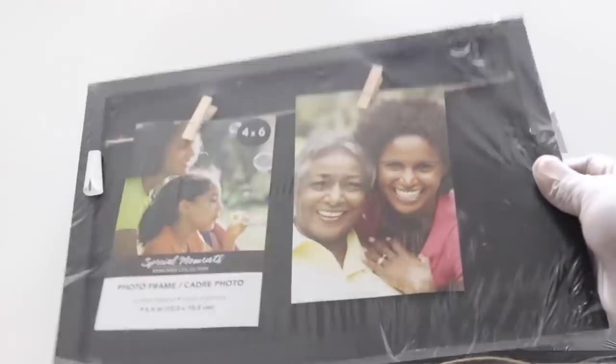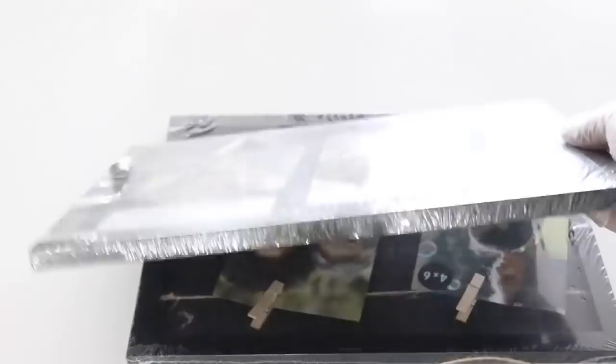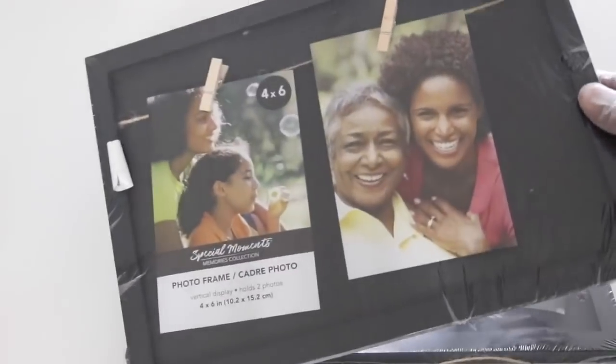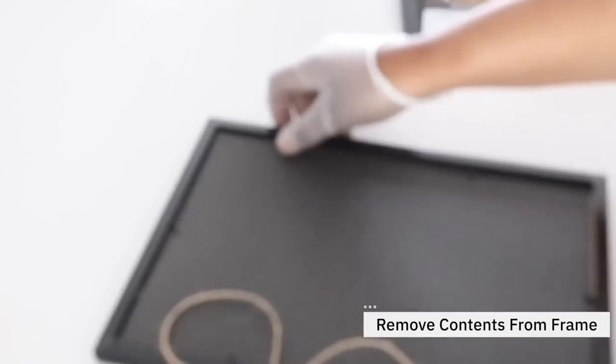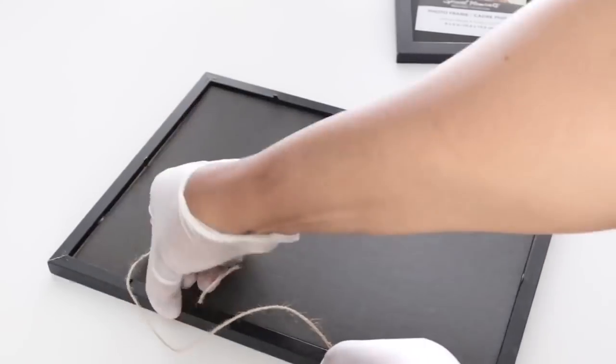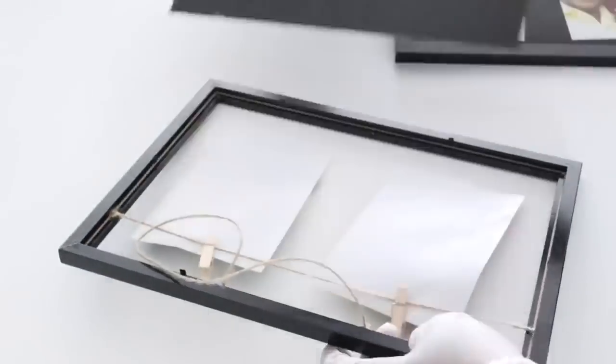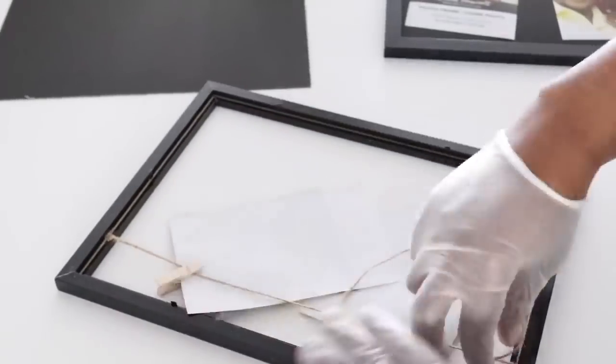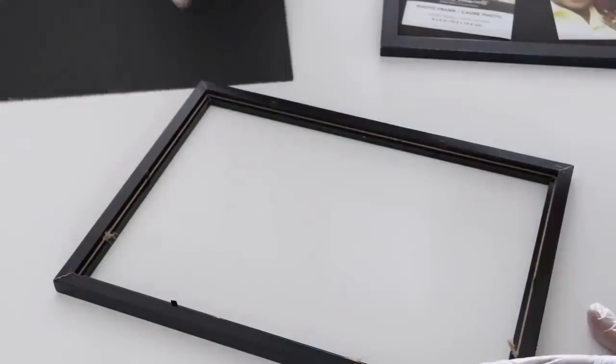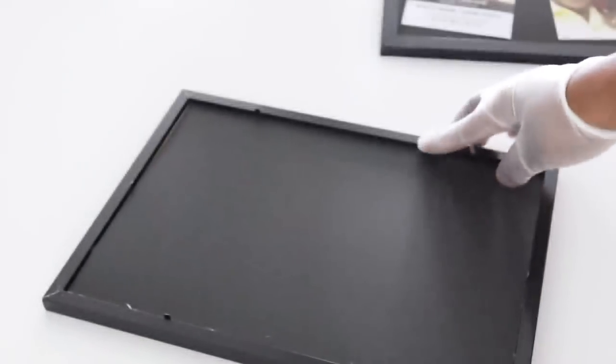For this project, you will need two Dollar Tree frames. If you notice, these frames do not have a glass front. The first thing that I'm going to do is remove all of the contents out of the frame. I'm going to repeat the same process for the other frame as well. What I'm going to do next is put the backing back in and use the tabs to secure it.